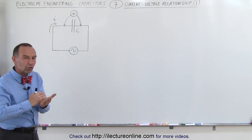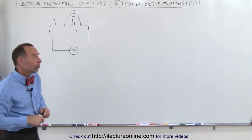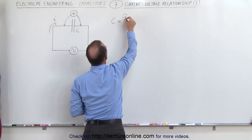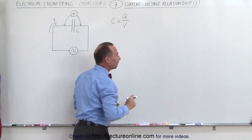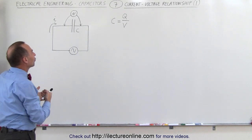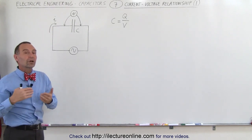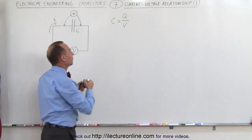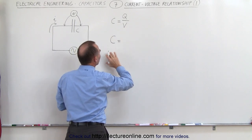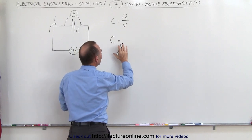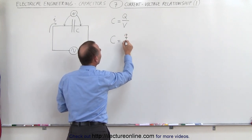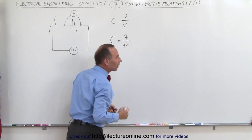We remember that when we charge up a capacitor to full charge, the capacitance by definition is equal to the total charge divided by the voltage across it. But what does that equation look like when we have a time-varying voltage source and the current and voltage are constantly changing? We can say that the capacitance at any moment in time is equal to the ratio of the charge on the capacitor at any moment in time divided by the voltage across that capacitor.